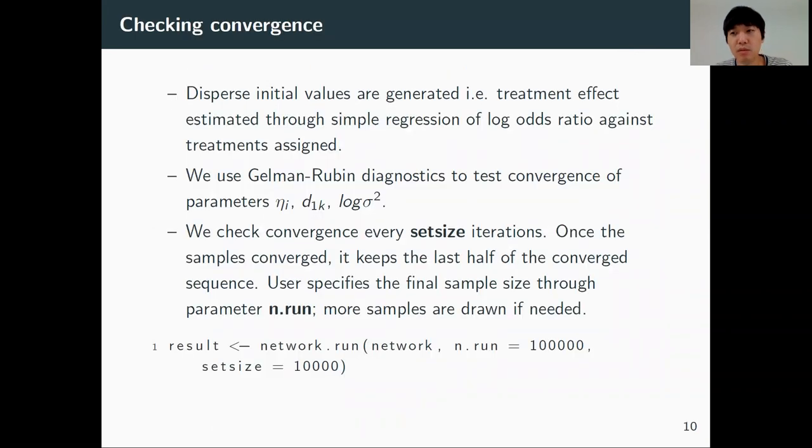Additional details that we have included include checking convergence. So even if the user didn't specify the initial values, we generate dispersed initial values, and then we use the Gelman-Rubin diagnostics to test convergence of parameters, such as the eta_i, the baseline risk, the average treatment effect D, and the heterogeneity.